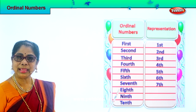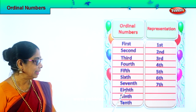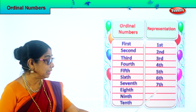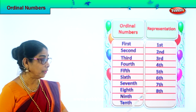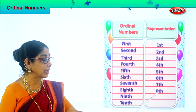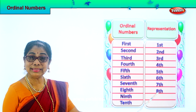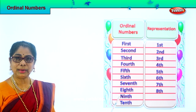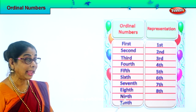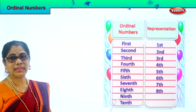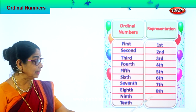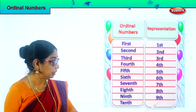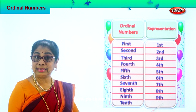Eighth. Spell eighth: E-I-G-H-T-H. Eighth. How do you represent eighth? Put number eight and put TH at the side: 8th. Ninth. Spell ninth: N-I-N-T-H. Ninth. And represent ninth by putting nine and TH: 9th. We read this as ninth.